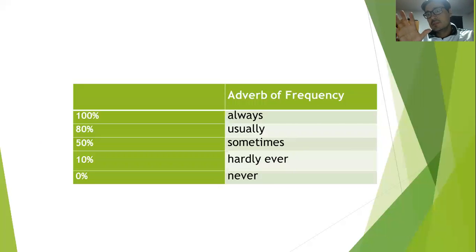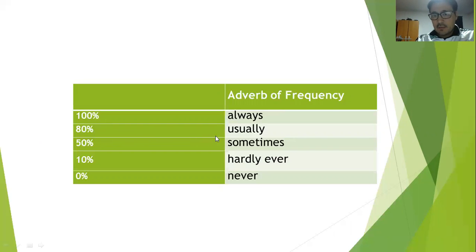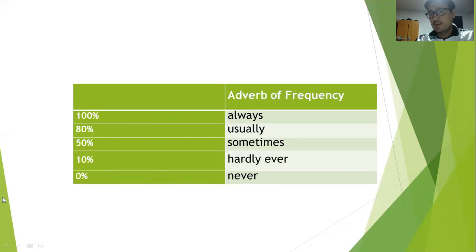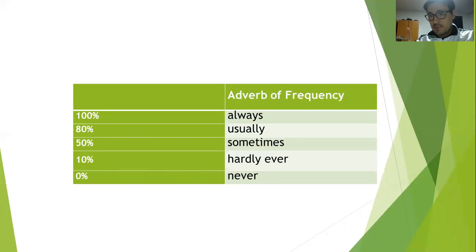Si lo llevara a una escala numérica con estas palabras: Always sería el 100%. Usually, un poco menos — usualmente. Sometimes, a veces, como un 50%. Hardly ever, casi nunca, un 10%. Y Never — zero, cero por ciento. Con eso yo expreso frecuencia.